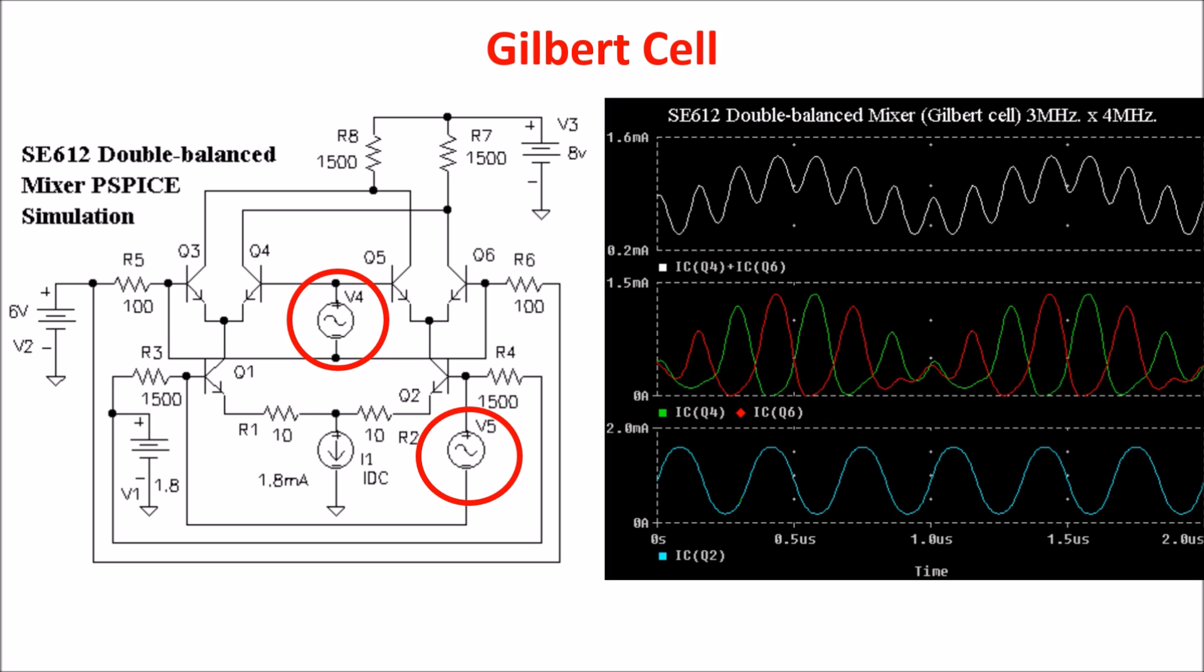In the simulation we see here the Q2 collector current, which is almost a sine wave at 3 MHz, and here the collector current of both Q6 and Q4, where you can still see the 3 MHz component. These two currents are summed together giving the current flowing in R7, in which we cannot see anymore the 3 MHz component, but we clearly see a wave shape appearing to be a combination of 1 MHz and 7 MHz sine waves.